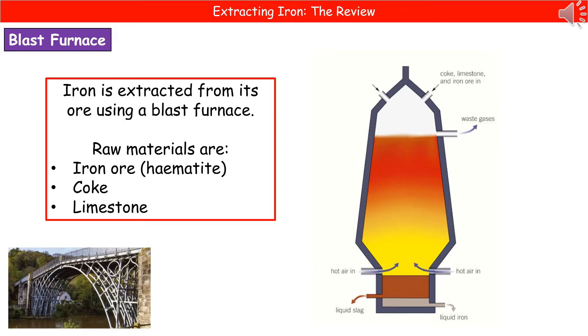We use our iron ore because that contains our iron-3 oxide. The coke is mainly made of carbon, which we've made by heating coal without air being present. And then our limestone is going to be used to purify the iron.